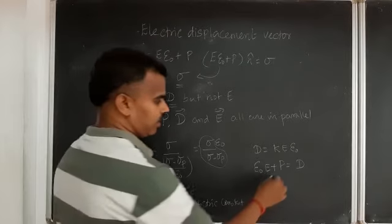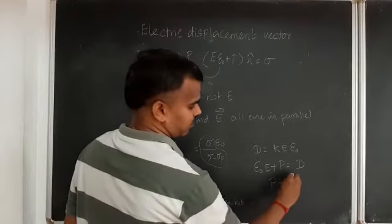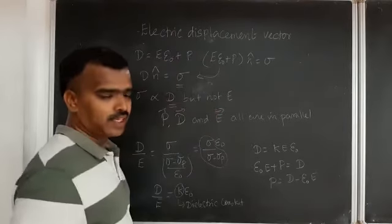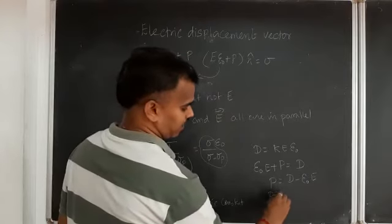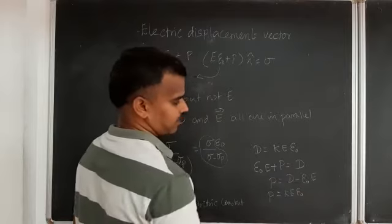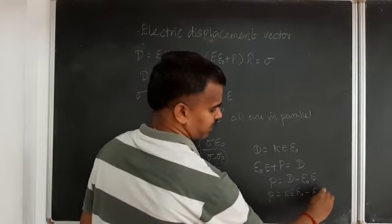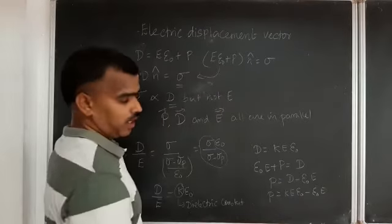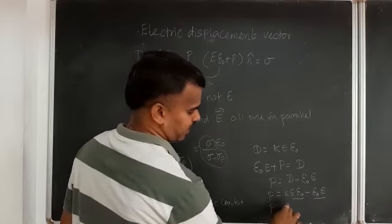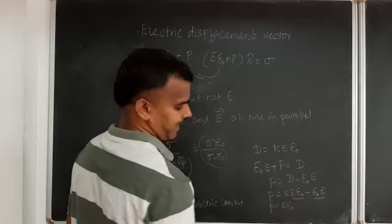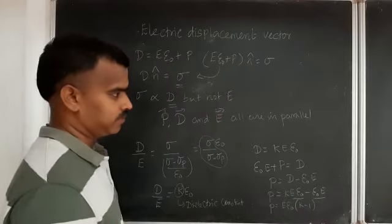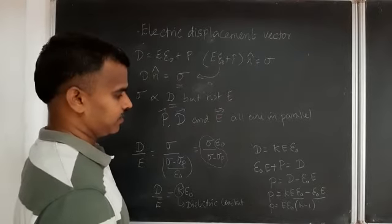From the equation ε·E + P = D, we can write P = D minus ε·E. Substituting D = K·ε·E, we get P = K·ε·E minus ε·E. Taking ε·E as common, we can write P = ε·E·(K minus 1).